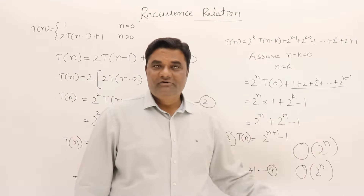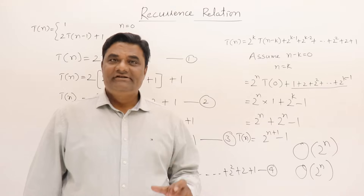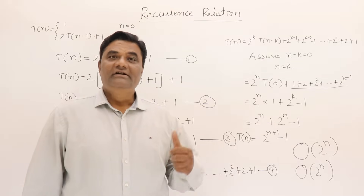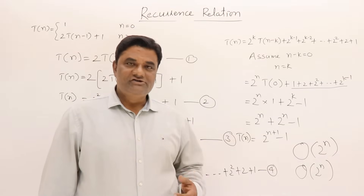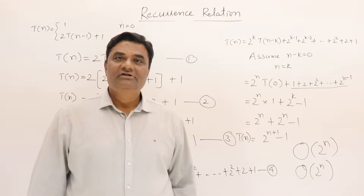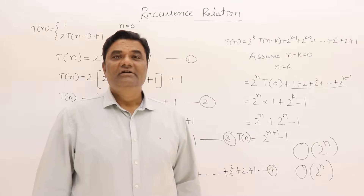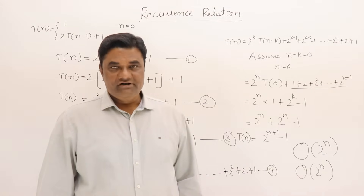So the answer is Θ(2^n). In the next video I'll show you the Master's Theorem for decreasing functions — you can watch that. Thank you.